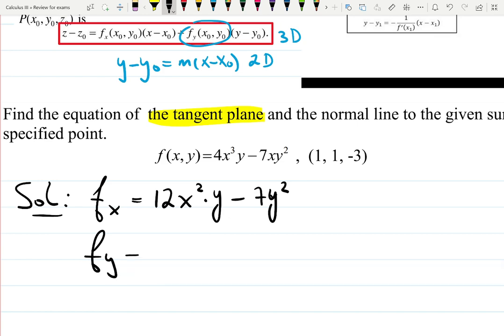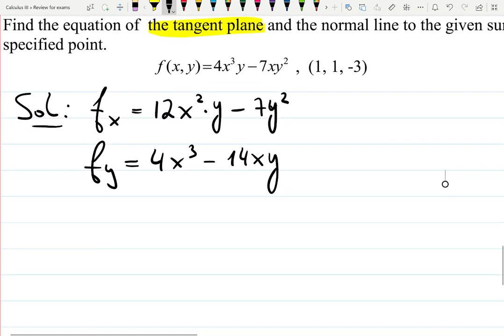Derivative with respect to y. Now y is a variable. Derivative of y is 1. 4x cubed stays minus 14xy. Now we need to plug the point. Just like in 2D case, you find your derivative, you plug the point 1, 1 and minus 3. That's what gives you slope.